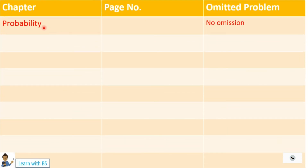Then we have the Probability chapter — it has been fully retained, nothing is omitted. You have to do the entire chapter.